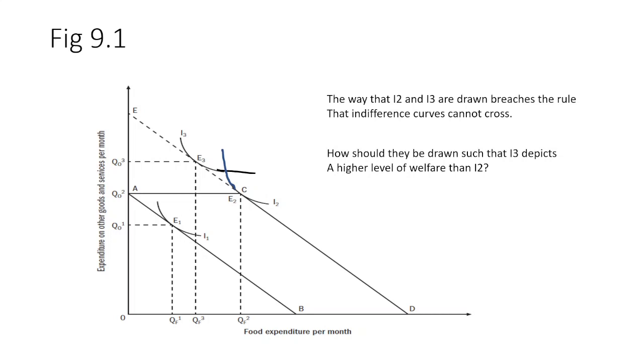Obviously, I3 and I2, if you extend them, you can very easily see the original I2 and I3 will cross each other and that's not allowed because we're looking at one individual's indifference curves. How should these indifference curves be drawn if I3 is supposed to lie higher than I2?